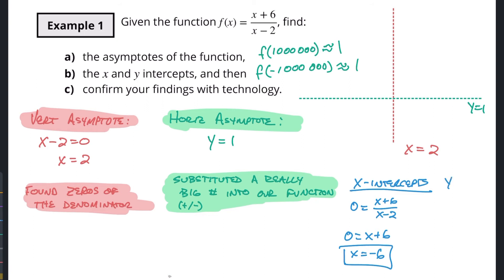For the y-intercept, set x = 0: y = (0 + 6)/(0 - 2) = 6 / -2 = -3. So the y-intercept is at y = -3.